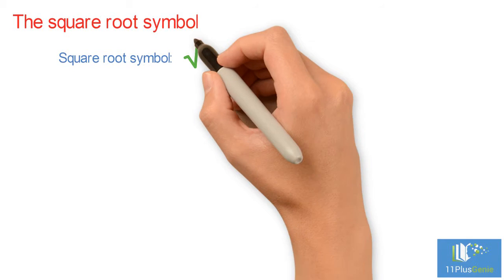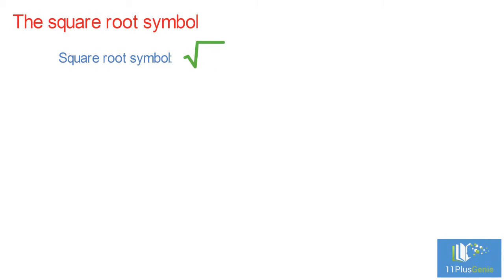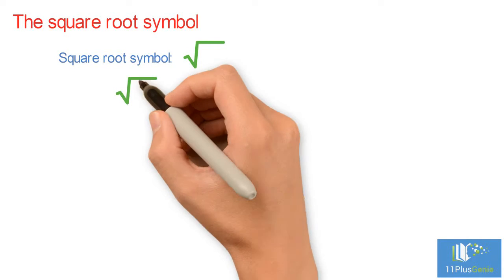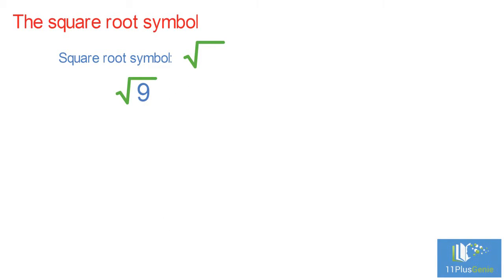The square root symbol. This is the special symbol that means square root. We use it like this and we say square root of 9 equals 3. When we find the square root of a number, we must also remember the negative value, because the square root can also be minus 3. Because minus 3 times minus 3 equals 9.